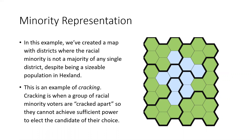We've created districts here where the racial minority is not a majority of any single district, despite being a decent-sized population of Hexland. This map is actually an example of cracking. Cracking is a type of gerrymandering where a racial minority group is cracked apart so they can't achieve sufficient power to elect the candidate of their choice in any district. This would be a perfect example of racial gerrymandering that would be unconstitutional or illegal under the Voting Rights Act — this is what we're trying to avoid.